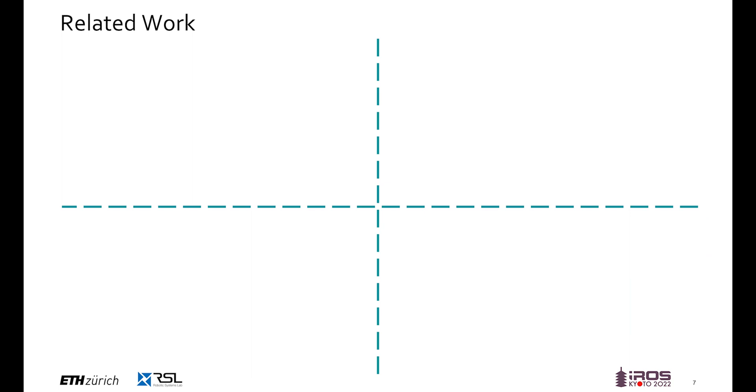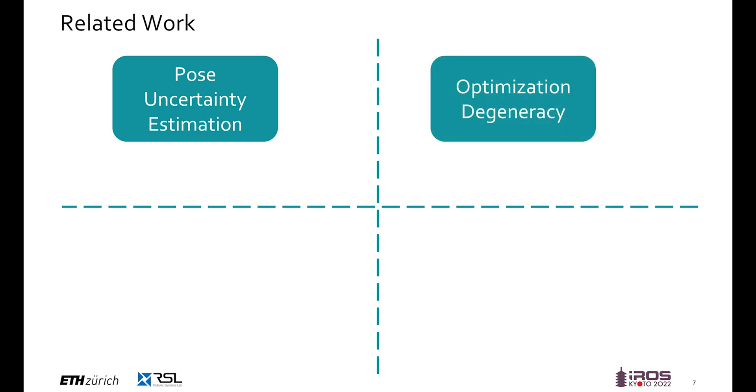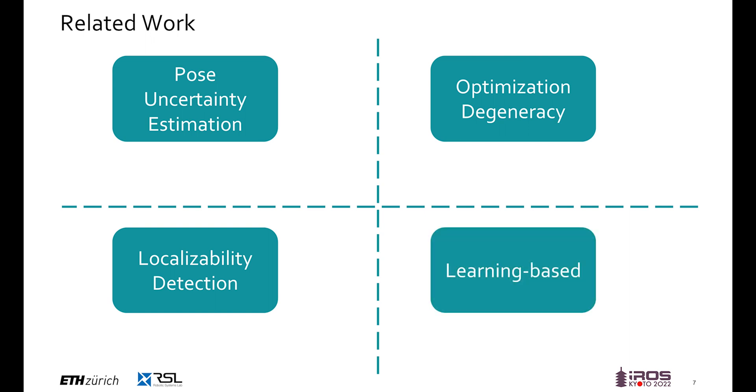Related work that investigated similar situations can be divided into four categories. The first cluster addresses the quantification of pose uncertainty, mostly by computing an estimate of the ICP covariance. The second cluster researches optimization degeneracy in cases where the environment does not provide sufficient geometric constraints. The third domain introduces the localizability metric by looking at constraints or features in the environment. Lastly, some learning-based approaches for computing the ICP covariance or pose uncertainty are recently researched.